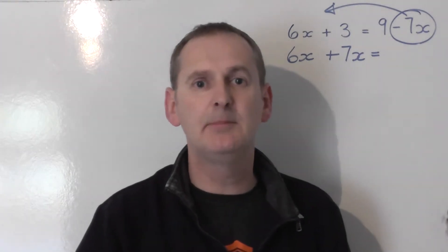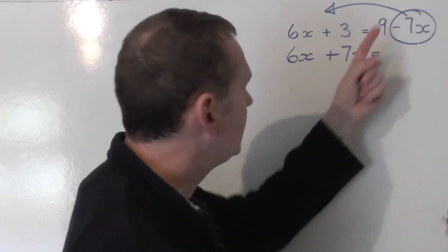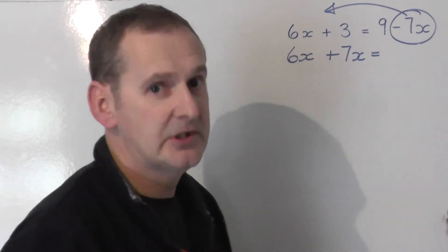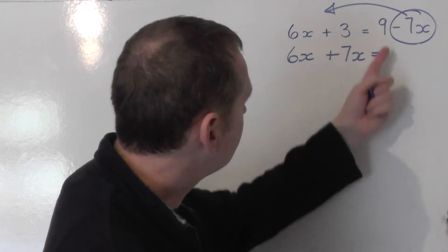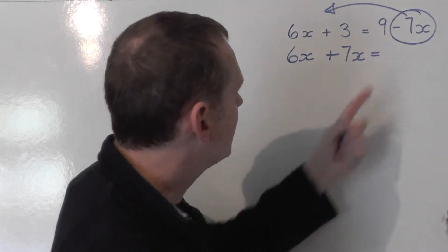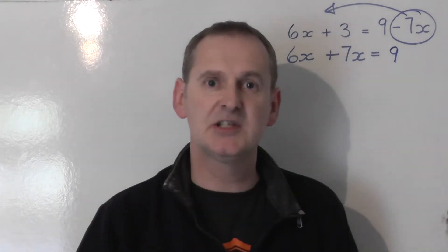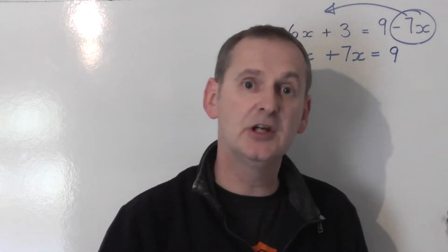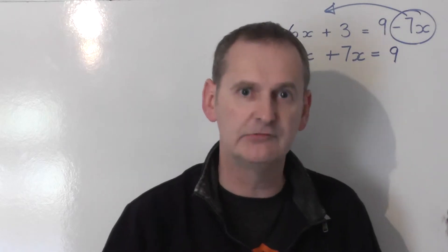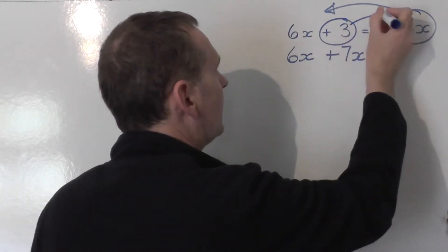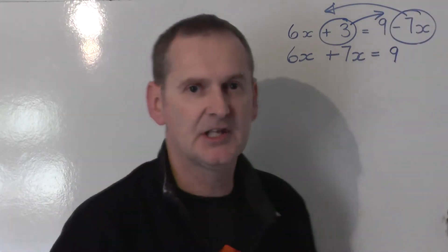I now take the two number terms that we've got, the 3 and the 9, and collect them together on the right-hand side. It doesn't matter which one we put first. I'll put the 9 down first. The 9 doesn't swap sides, so it doesn't swap signs. It stays as 9, or if you like, plus 9. You can't see the plus in front of it because it's the first thing that we've written down.